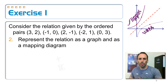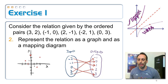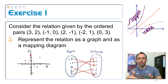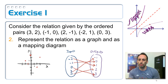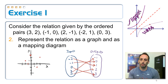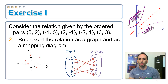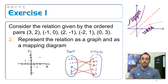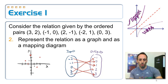That was pretty simple. A graph is a more visual way to look at the data in your relation — sometimes more helpful than a list of ordered pairs, especially when looking for a pattern. In the mapping diagram, the inputs and outputs are listed from least to greatest. Both are just different ways to represent the same relation.